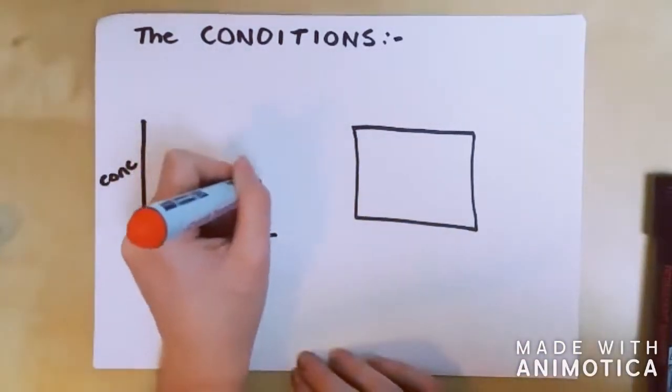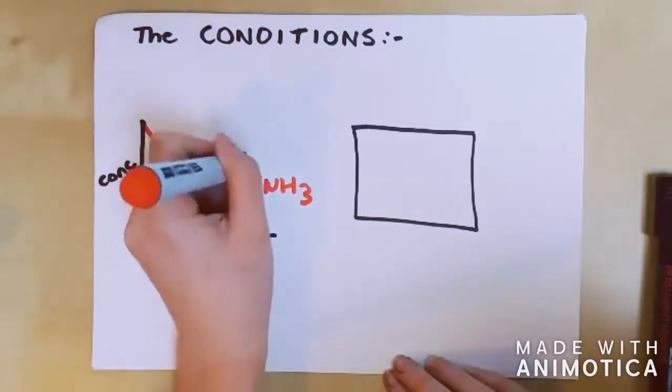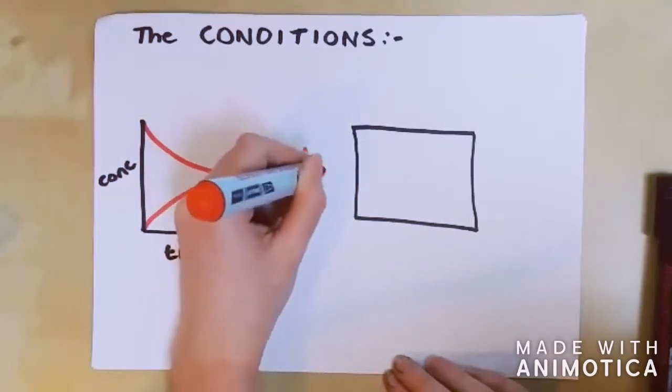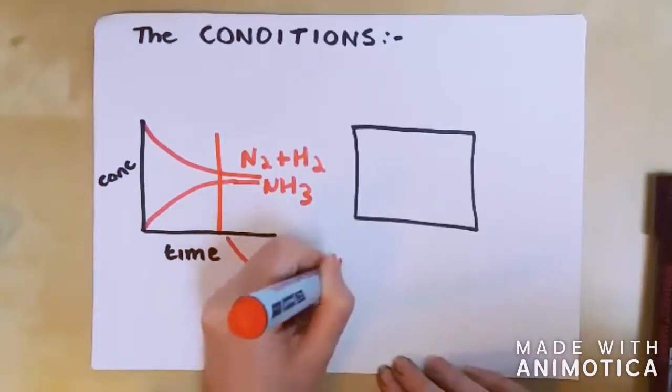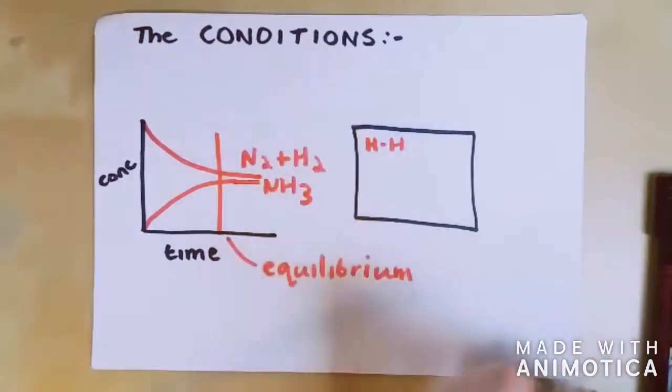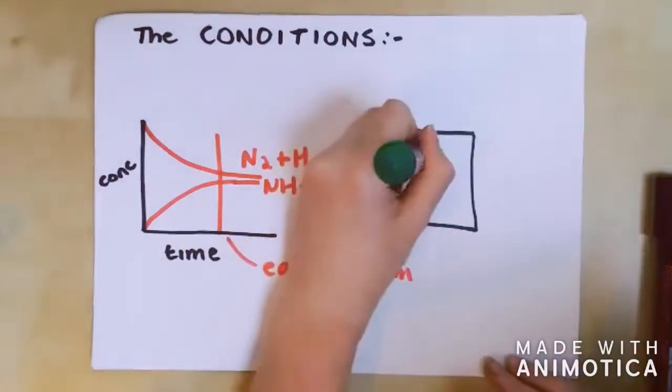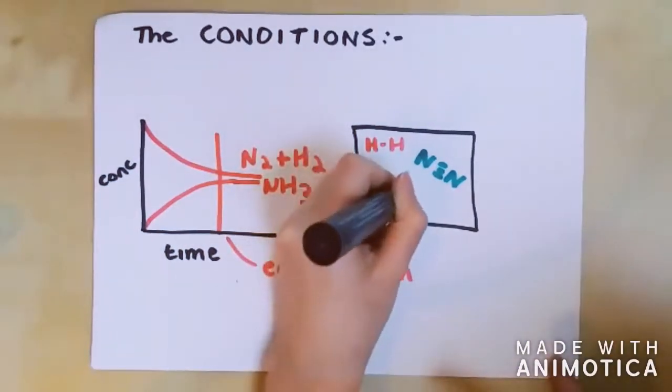To understand the conditions needed for the reaction, we must first understand the term equilibrium. If you were to place nitrogen and hydrogen with a catalyst at high temperatures and pressures into a sealed container, the two molecules would react to form ammonia. But as nitrogen and hydrogen are used up, the reaction slows down. Eventually, the ammonia molecules reach a point where they begin to decompose back into nitrogen and hydrogen.